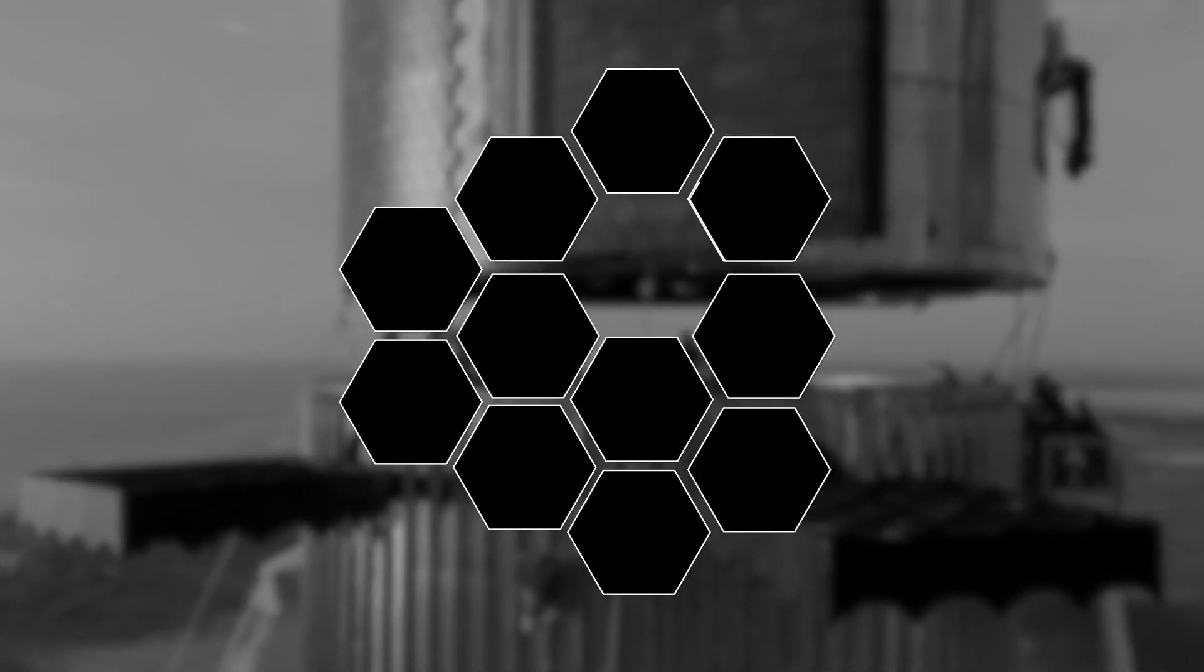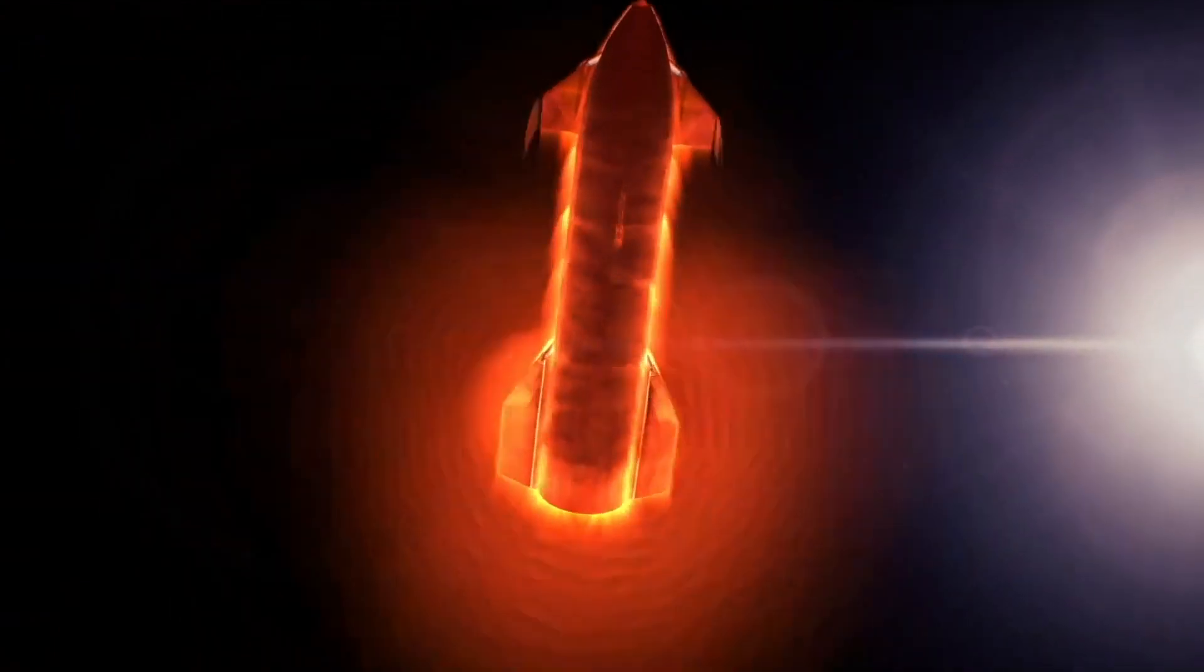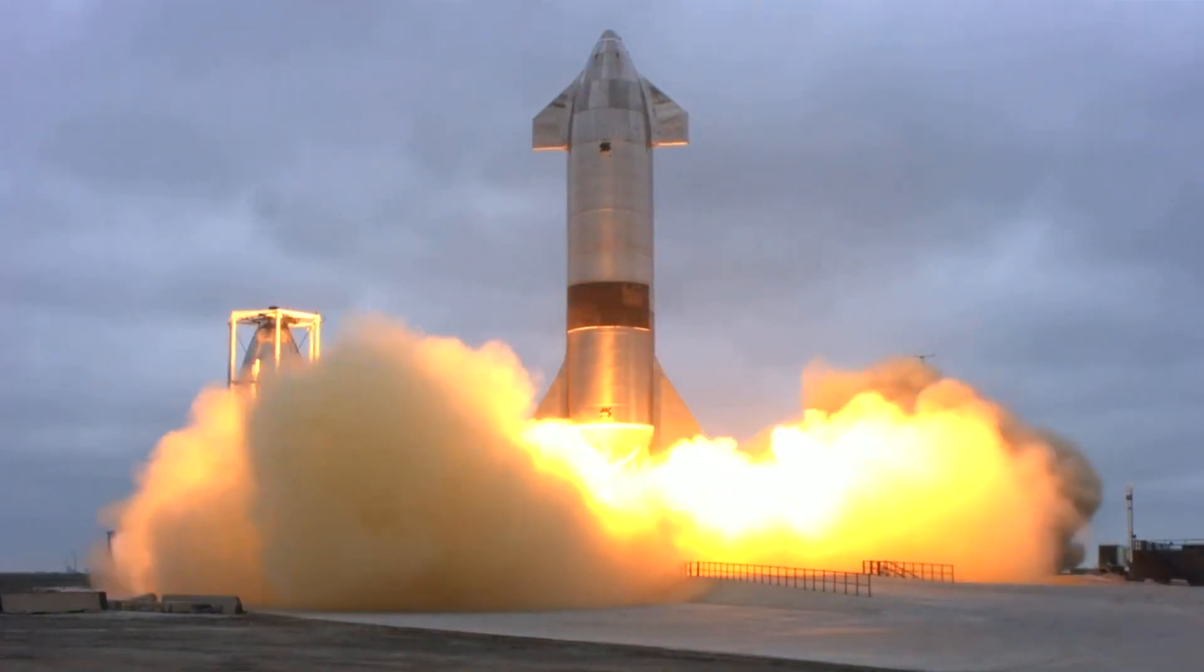This is partly why the tiles are a hexagon shape. If the shape was square, for example, hot gas could easily run through the gaps between the tiles, which could expose the internal structure to the extreme temperatures. It's times like these when you truly appreciate the world of engineering.